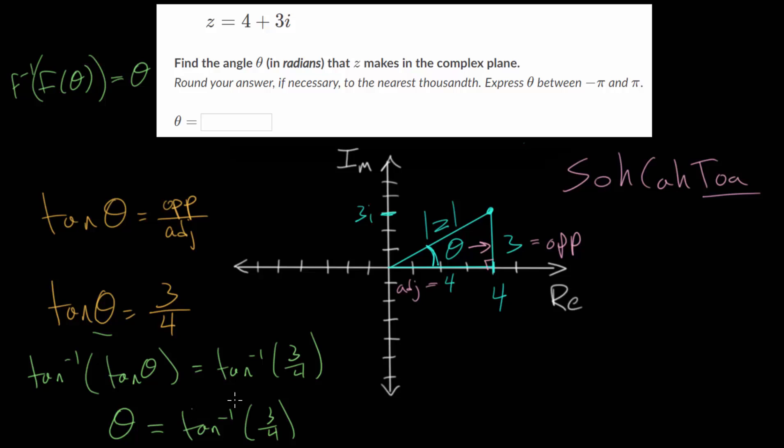And one important point, since we want our answer to be in radians, we need to make sure our calculator is in radian mode. And once we know it's in radian mode, we can just plug in the inverse tangent of three fourths to get an approximate answer, since this answer will be an irrational number. So the calculator will just have to round it.